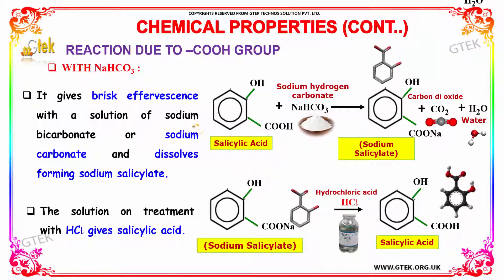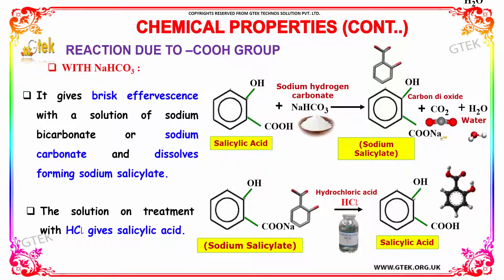The reaction due to the COOH group with NaHCO3 produces a brisk effervescence and also a product known as sodium salicylate, and also produces sodium carbonate, carbon dioxide, and water as byproducts. Similarly, the solution on treatment with HCl produces salicylic acid.